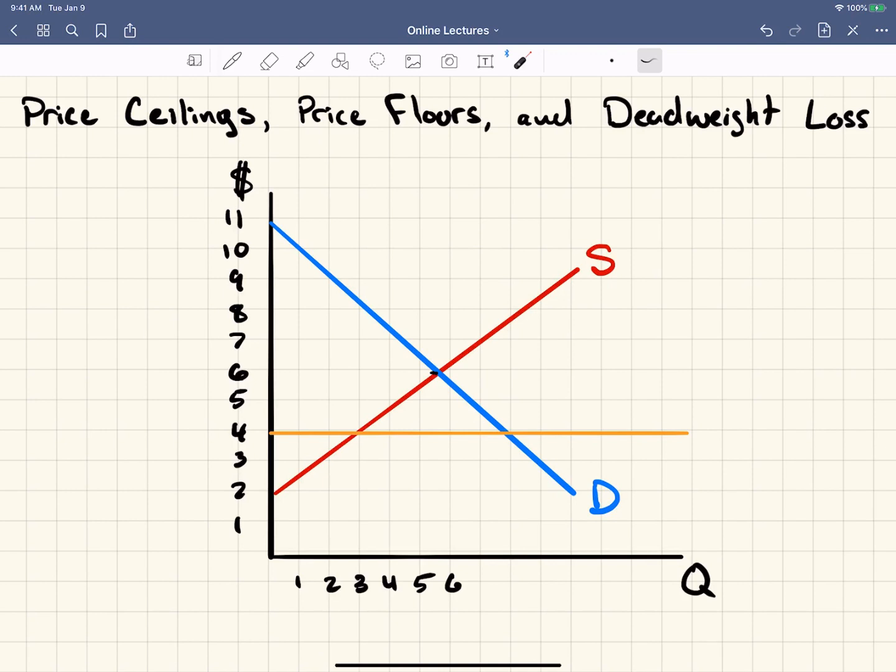It's when the government intervenes and fixes the market to say the price wants to go up to here, but it can't because it gets stuck at the ceiling. When the government imposes price ceilings, this does something bad to the market.